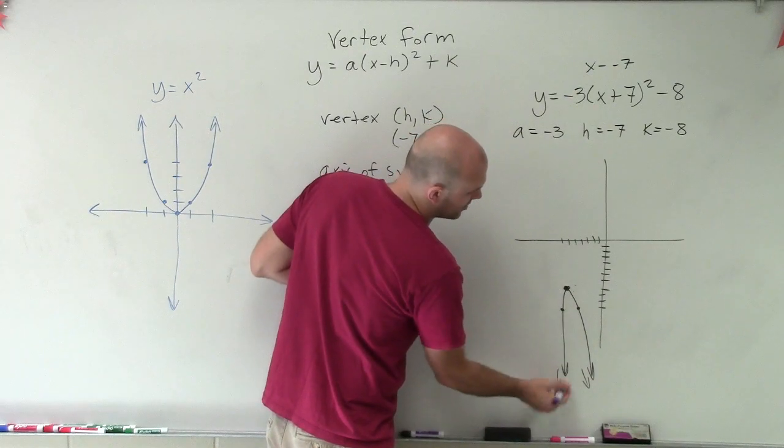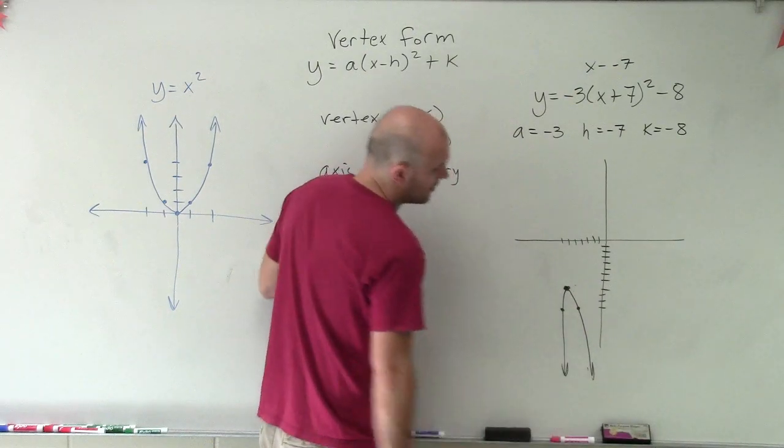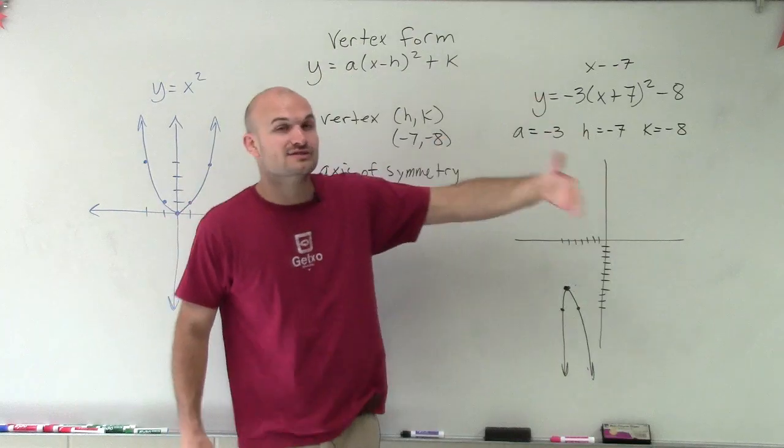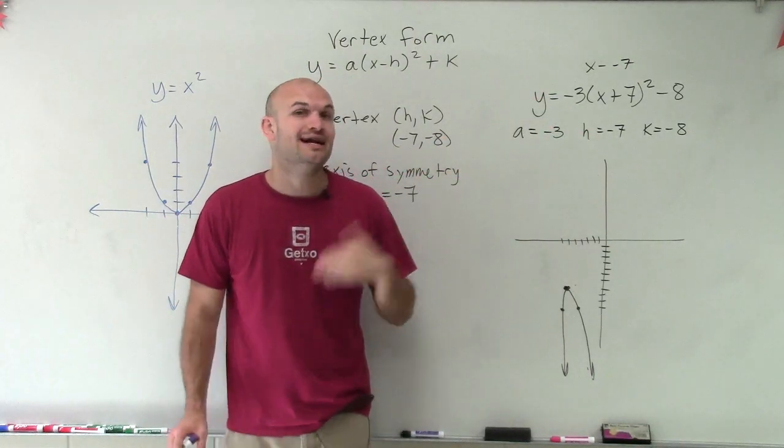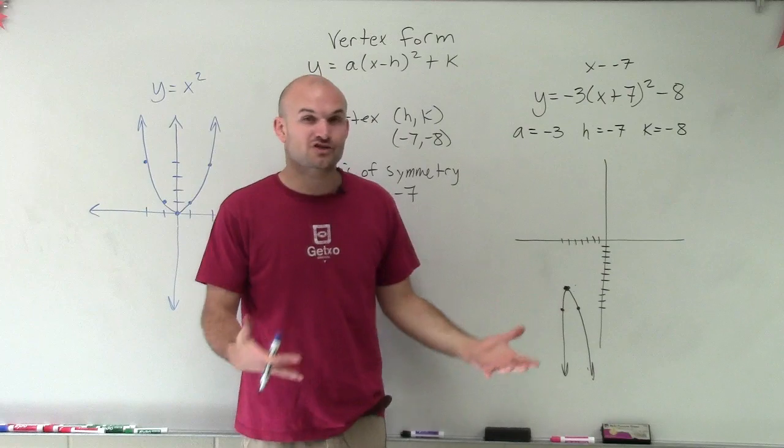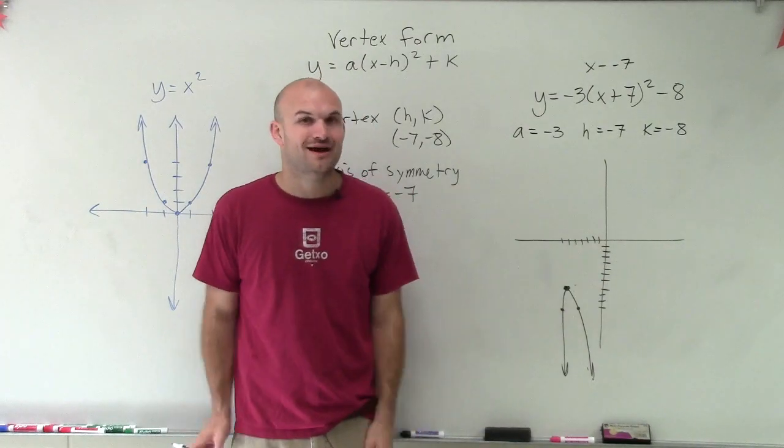So the graph is going to take a form, something like this. All right, and there is a y-intercept. But I'll show you a little bit later on how to go and find that algebraically rather than just by looking at this graph. Thanks.